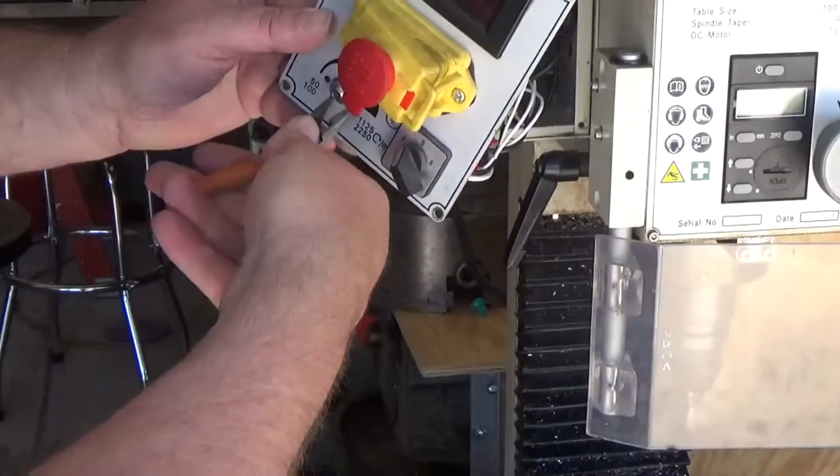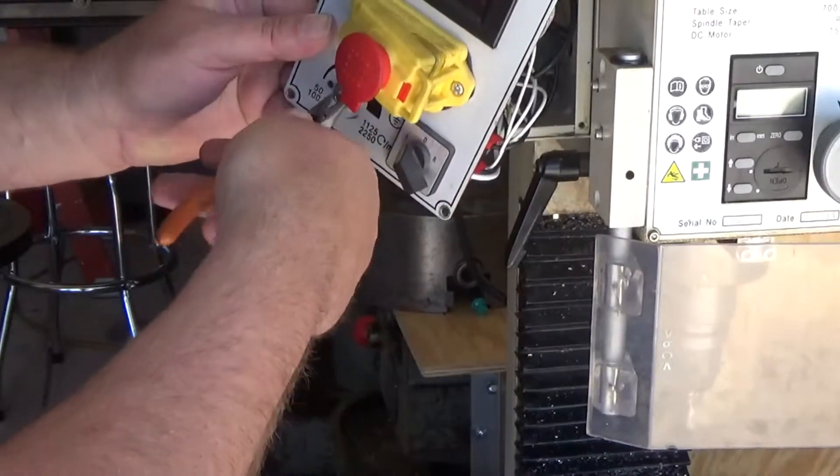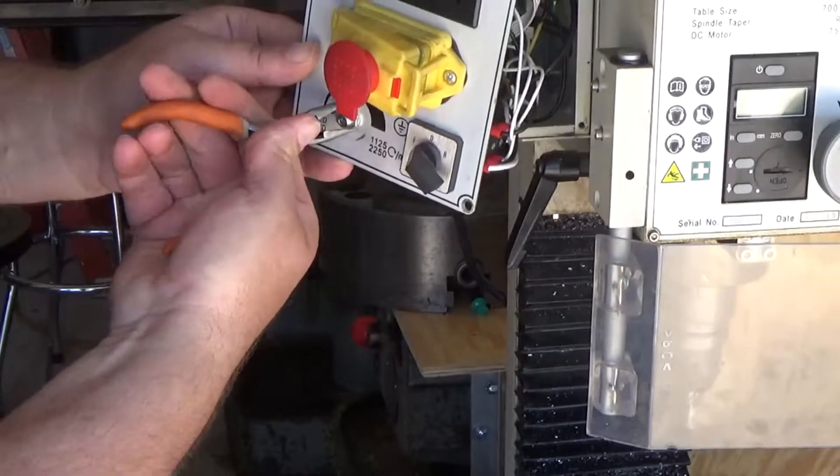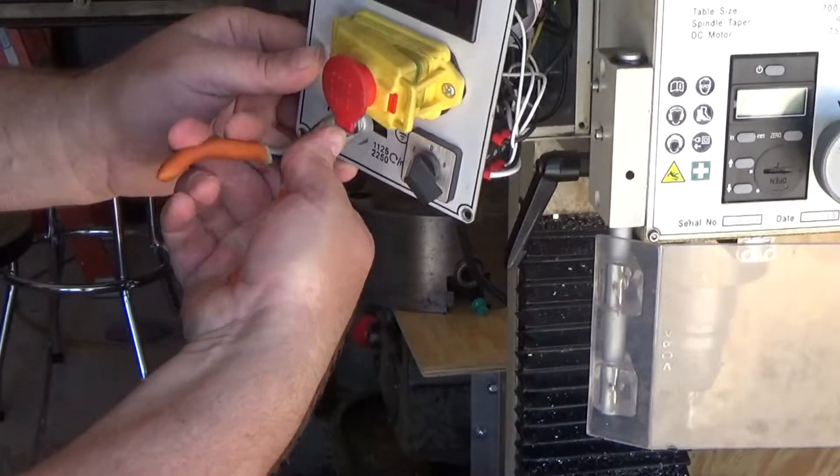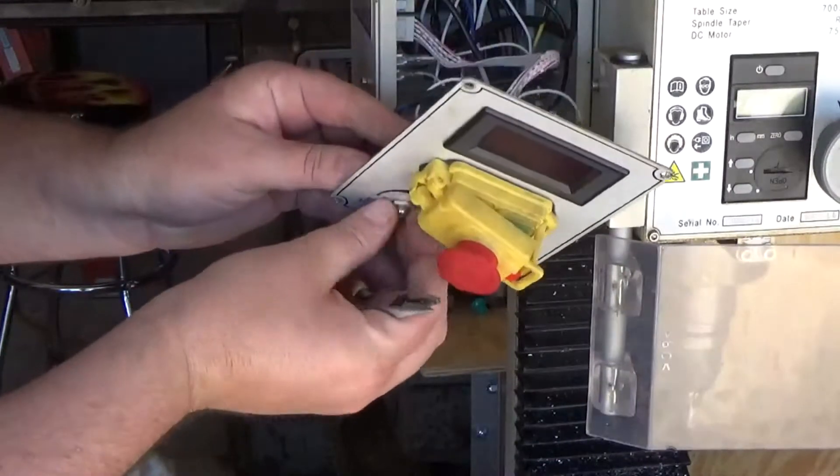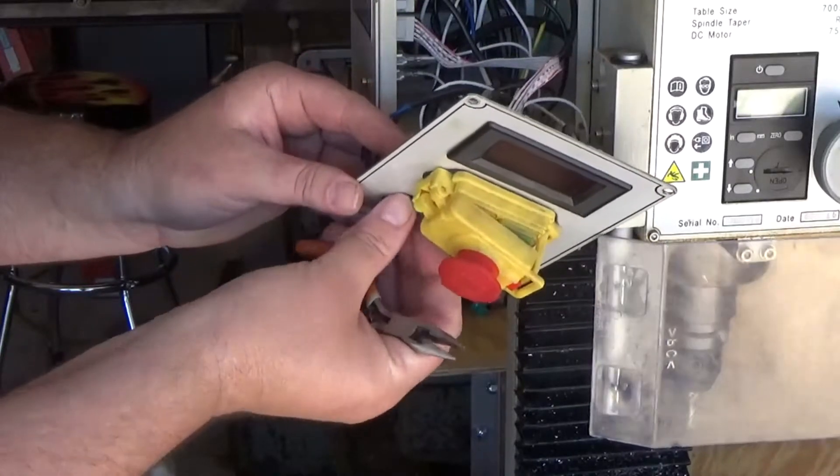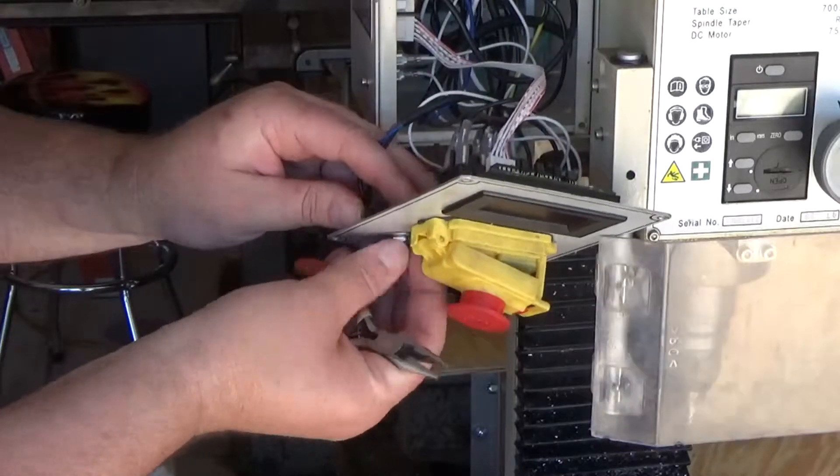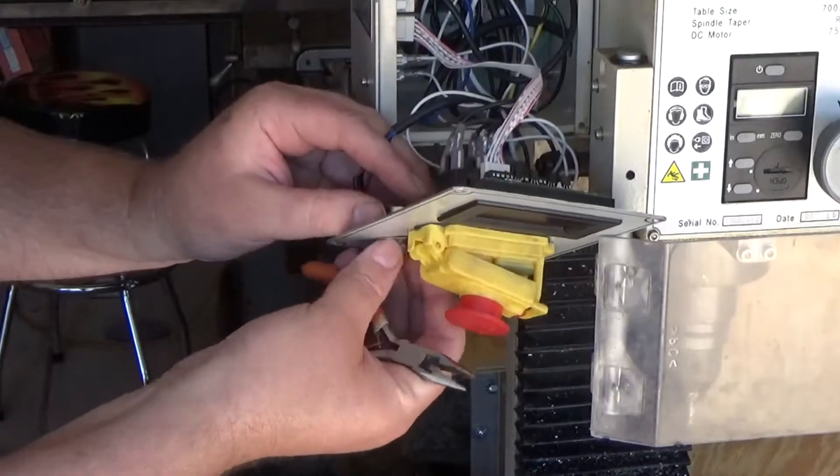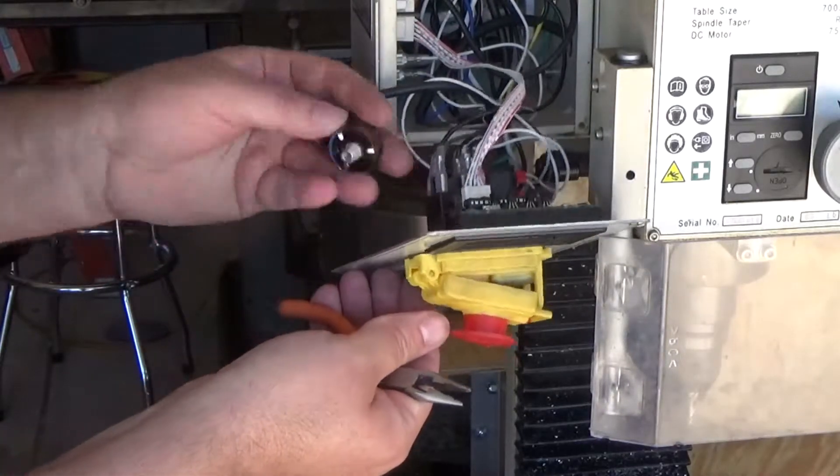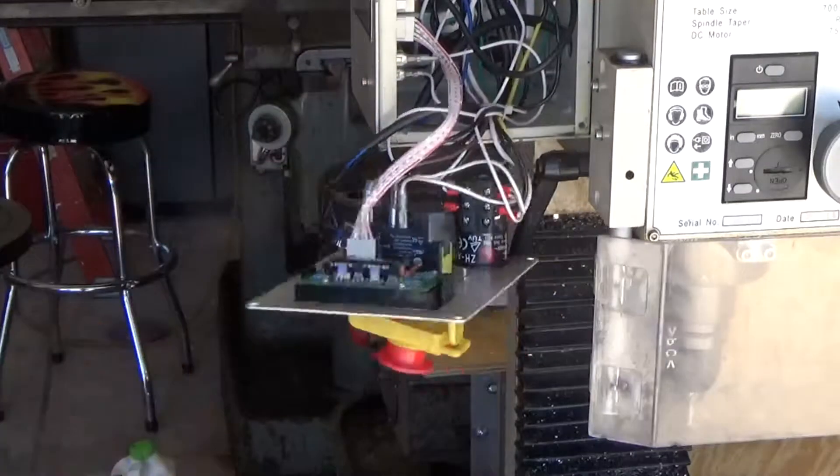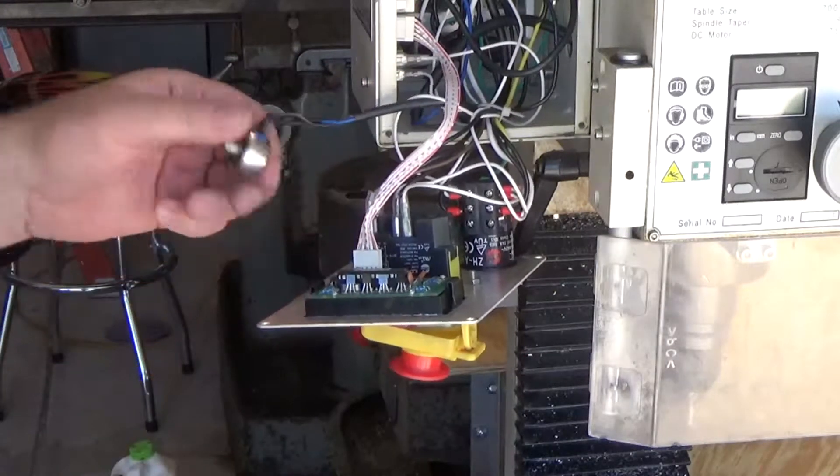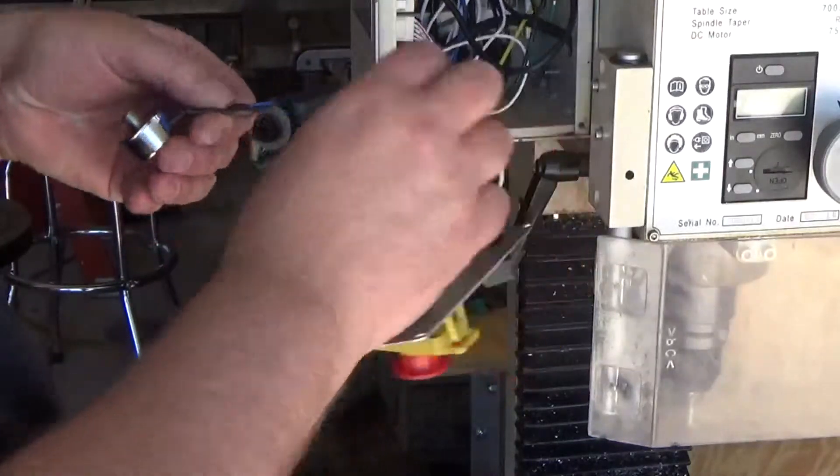Okay there's a nut on the front end here that we're going to remove here. Pull the potentiometer out. If I didn't mention it, make sure you turn the power off because it's hot in this box. So here's the potentiometer.